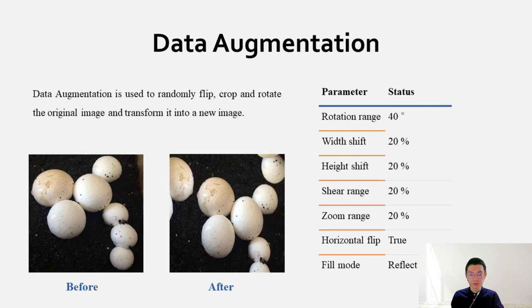Data augmentation is often used to obtain more images to improve computer vision system performance. It will randomly flip, crop, and rotate the original image and transform it into a new image. The table below shows the parameters used in setting the data augmentation. The image below shows one image before and after data augmentation process.